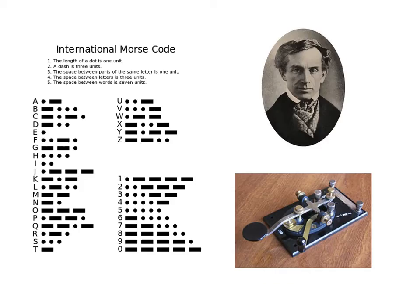In the 1830s, Samuel Morse, along with his research collaborators, developed a system for sending sequences of encoded letters and numbers over wired transmission lines via electrical telegraph.